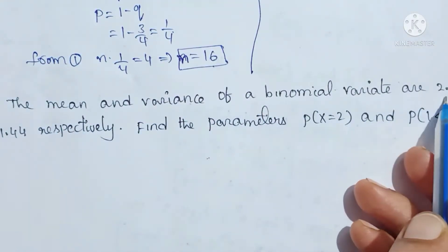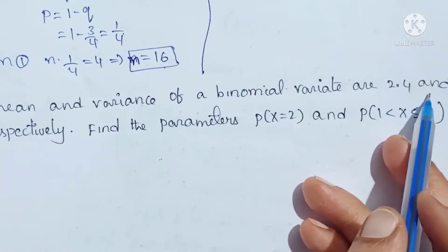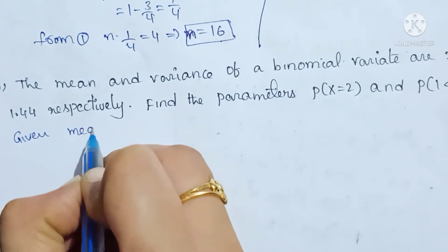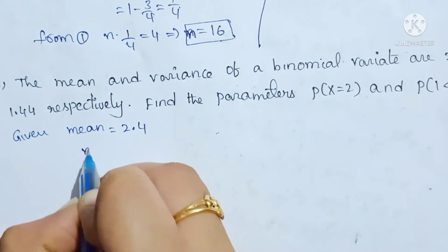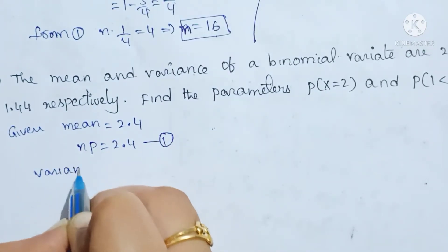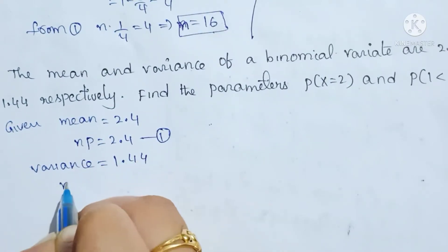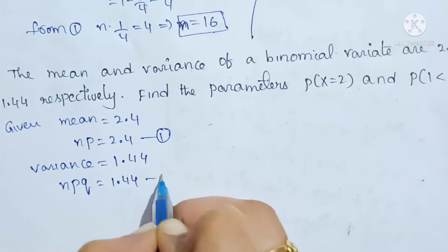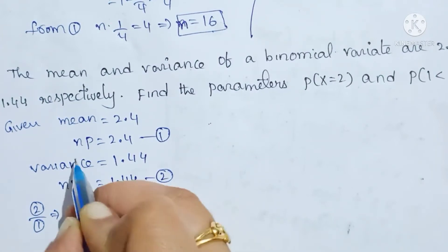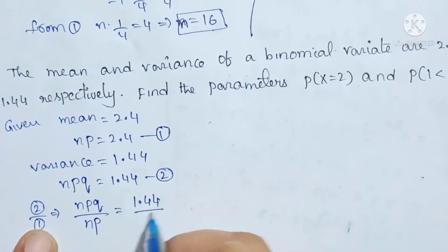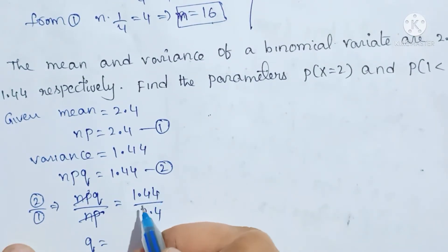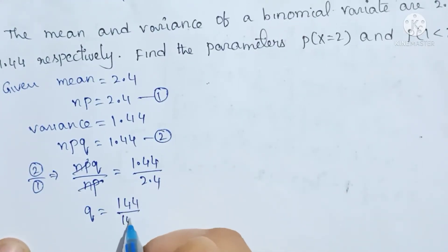Next problem: the mean and variance of a binomial distribution are 2.4 and 1.44 respectively. So np = 2.4 and npq = 1.44. Dividing npq by np: 1.44 divided by 2.4. np cancels, giving Q = simplification — 144 by 20 after adjusting decimal places.